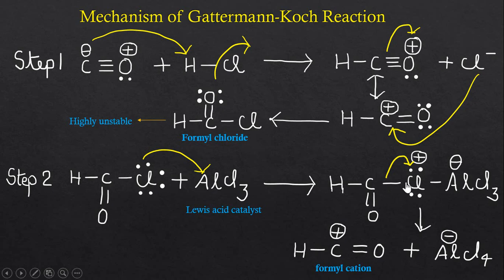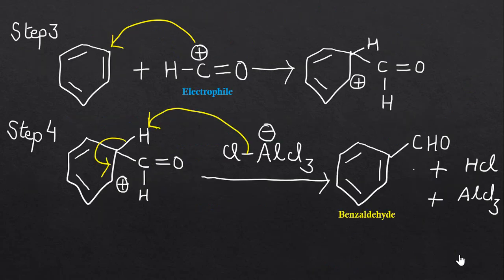Now in the next step, this carbon-chlorine bond will break due to the higher electronegativity of this chlorine atom, and we will get formyl cation and AlCl4 minus. Now in the next step, this formyl cation will behave as an electrophile.